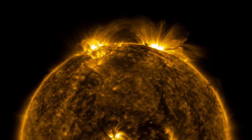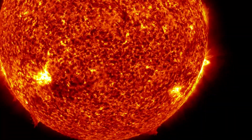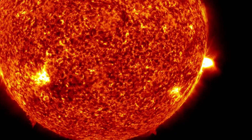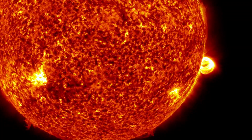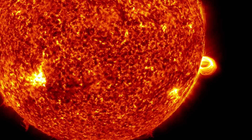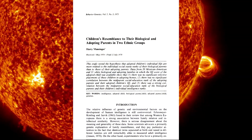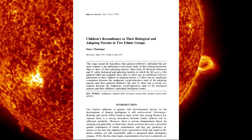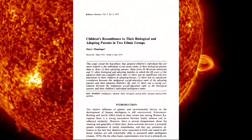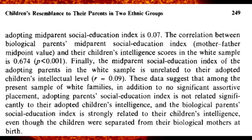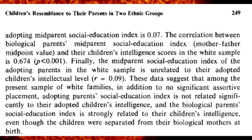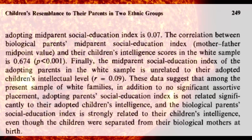You have genetic components to your behavior — behavioral genetics. Many people leave home at 18 with the express goal of being unlike their family, and then end up becoming just like them. One study I looked at — 'Children's Resemblance to Their Biological and Adopting Parents in Two Ethnic Groups' — specifically examined intelligence. It found that a child's intelligence wasn't strongly correlated with the adoptive parents' socioeconomic status; the biological parents' socioeconomic status was more correlated with the children's intelligence.